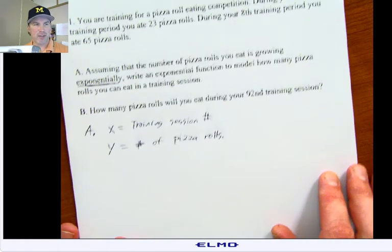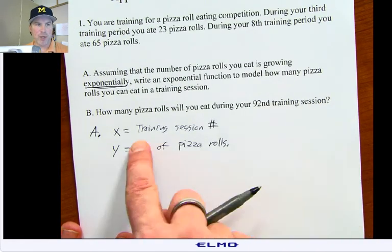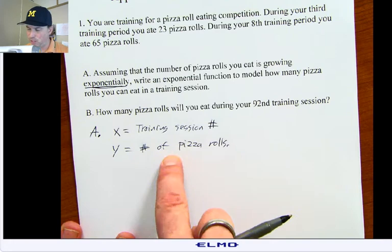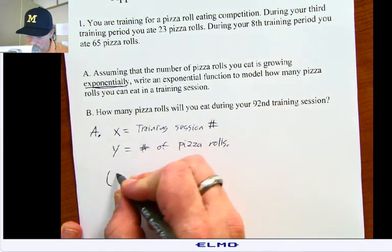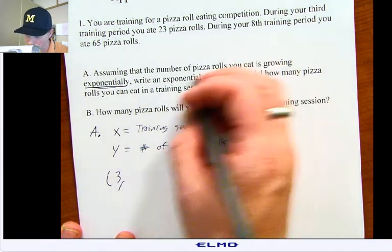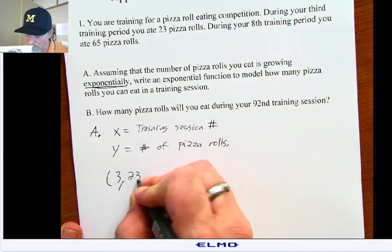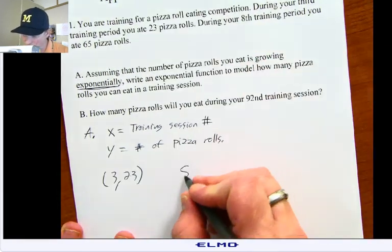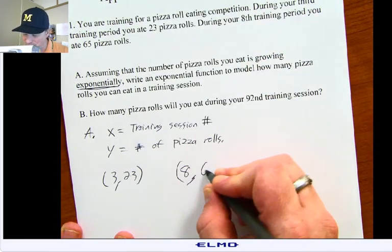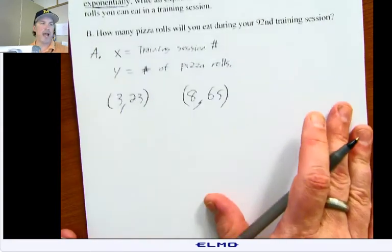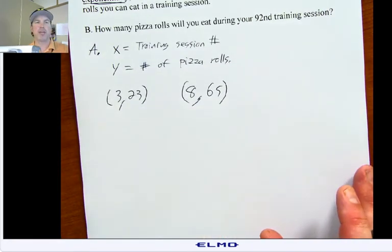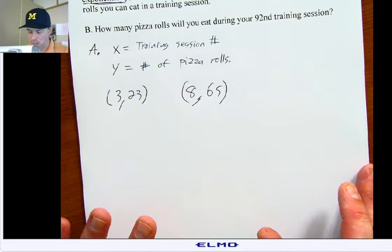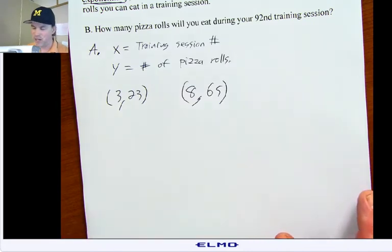Okay, so just like yesterday's problems, once you have your variables identified, you could write some coordinates. So for example, during the third session I ate 23 pizza rolls. During the eighth training period, I ate 65 pizza rolls. And now this is just like part one of yesterday's lesson. If you haven't watched part one, maybe you should go back and watch part one.